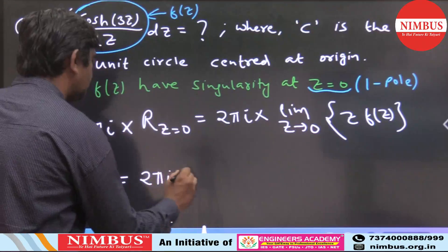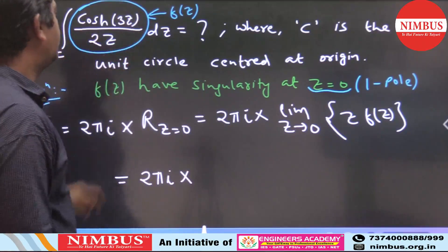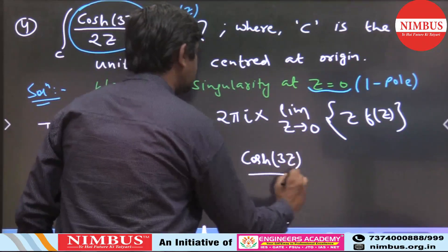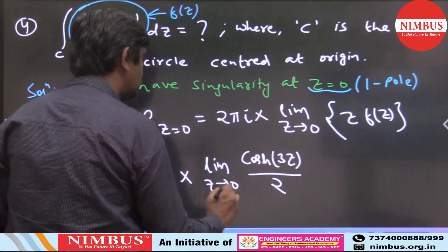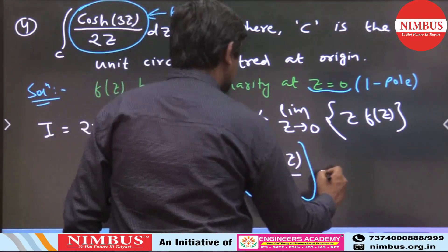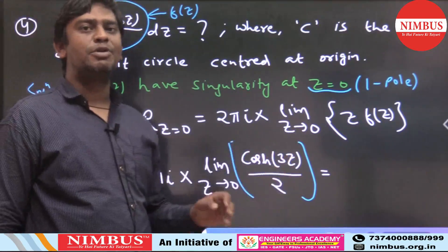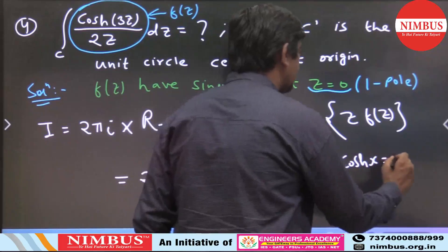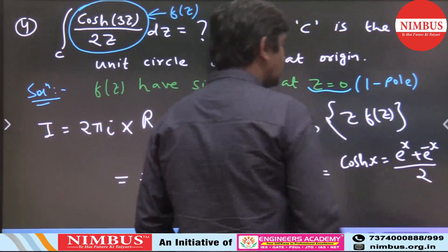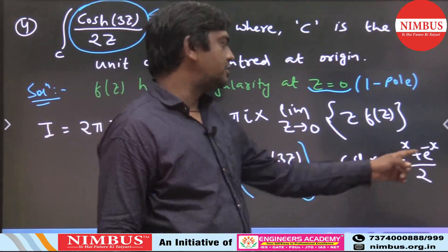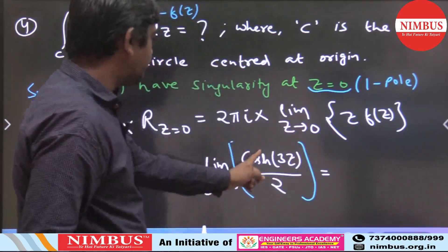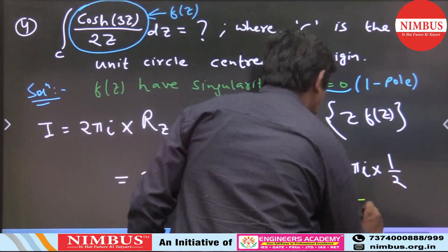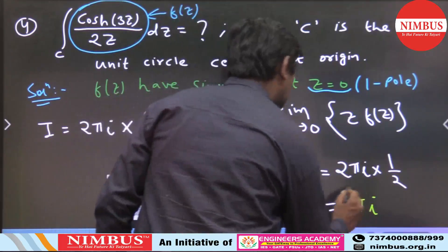So the answer is 2πi × [limit z→0 of z·f(z)]. When we multiply f(z) by z, the z in the denominator cancels, leaving cosh(3z)/2. Taking the limit as z → 0: cosh(0) = 1 (since cosh(x) = (e^x + e^(-x))/2, and at x=0 it equals 1). So the residue = 1/2. Therefore the answer is 2πi × (1/2) = πi. The final answer is πi.